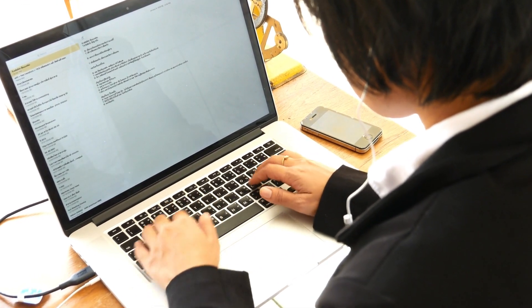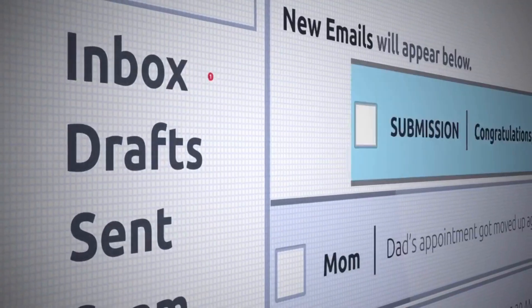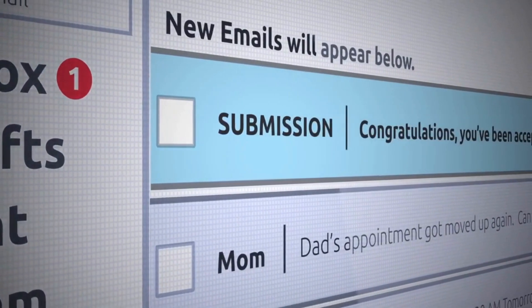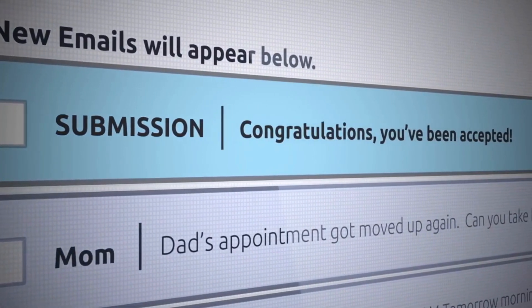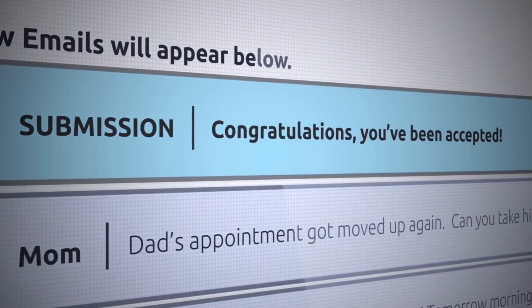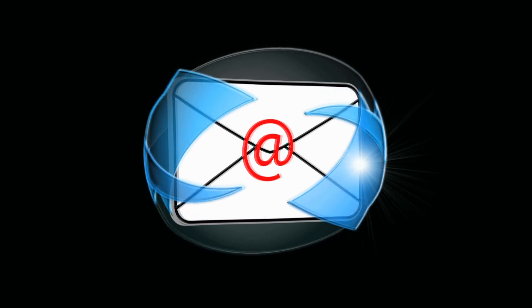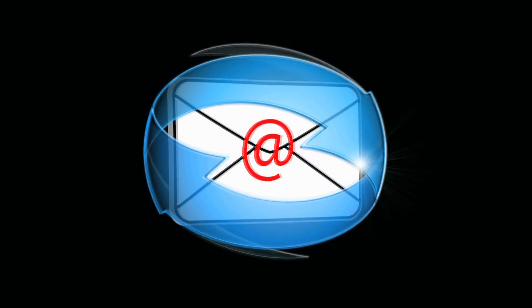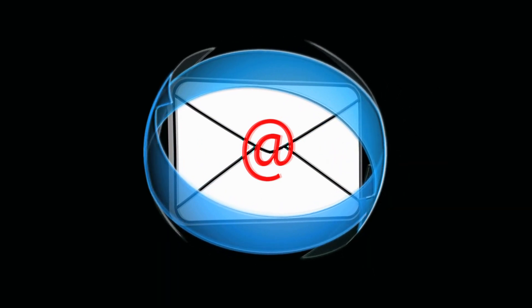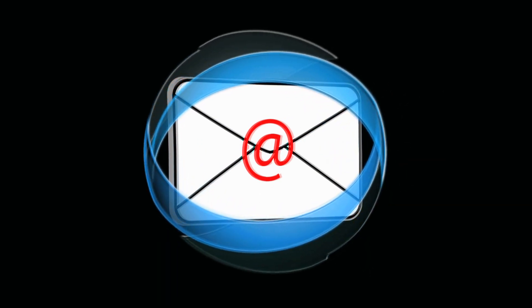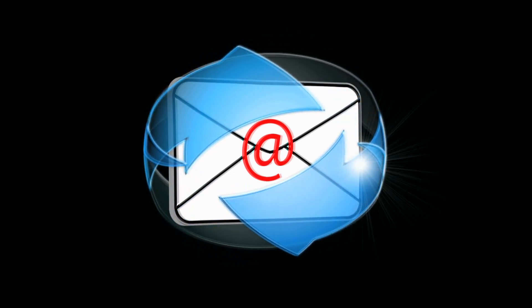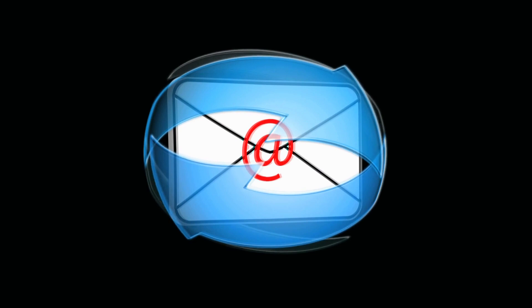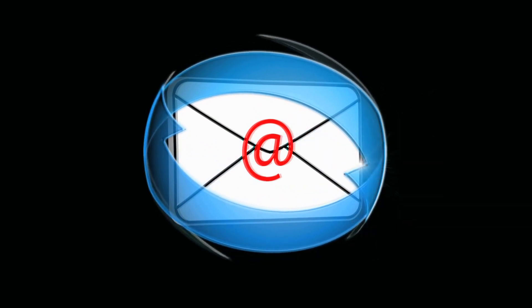Disclose Affiliate Relationships. Transparency is crucial — clearly disclose your affiliate relationship with Amazon in your emails. Many email marketing platforms require this, and it's a legal requirement in some jurisdictions. When promoting Amazon products in your emails, make sure they are directly related to the content and interests of your subscribers, and your recommendations should be genuine and align with their expectations.